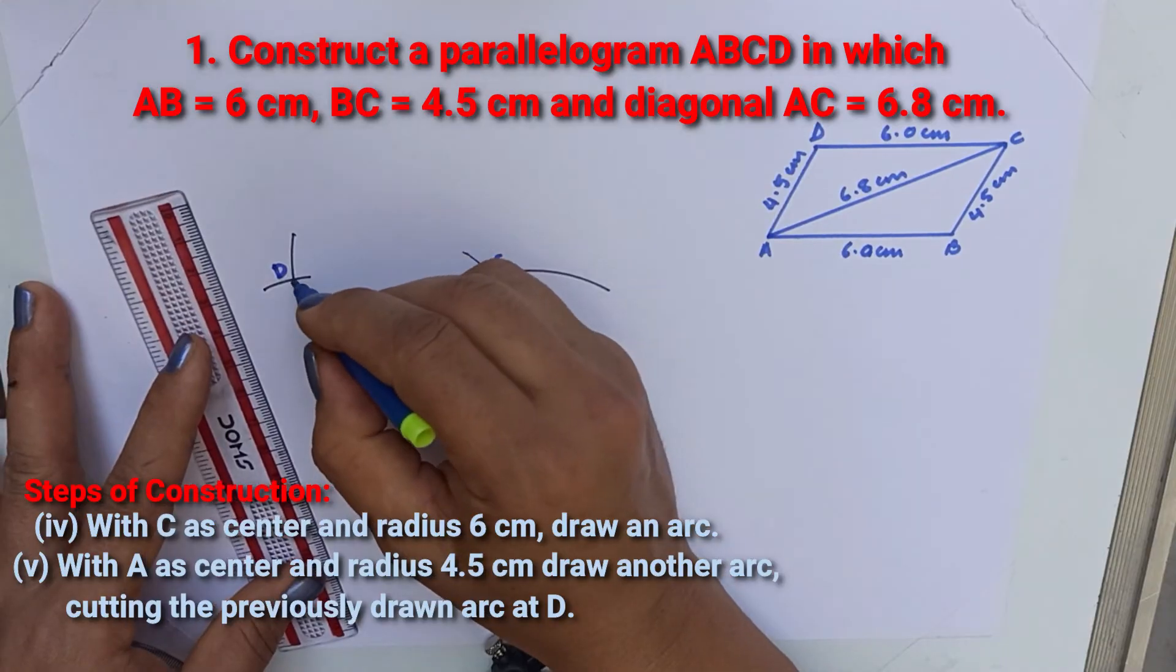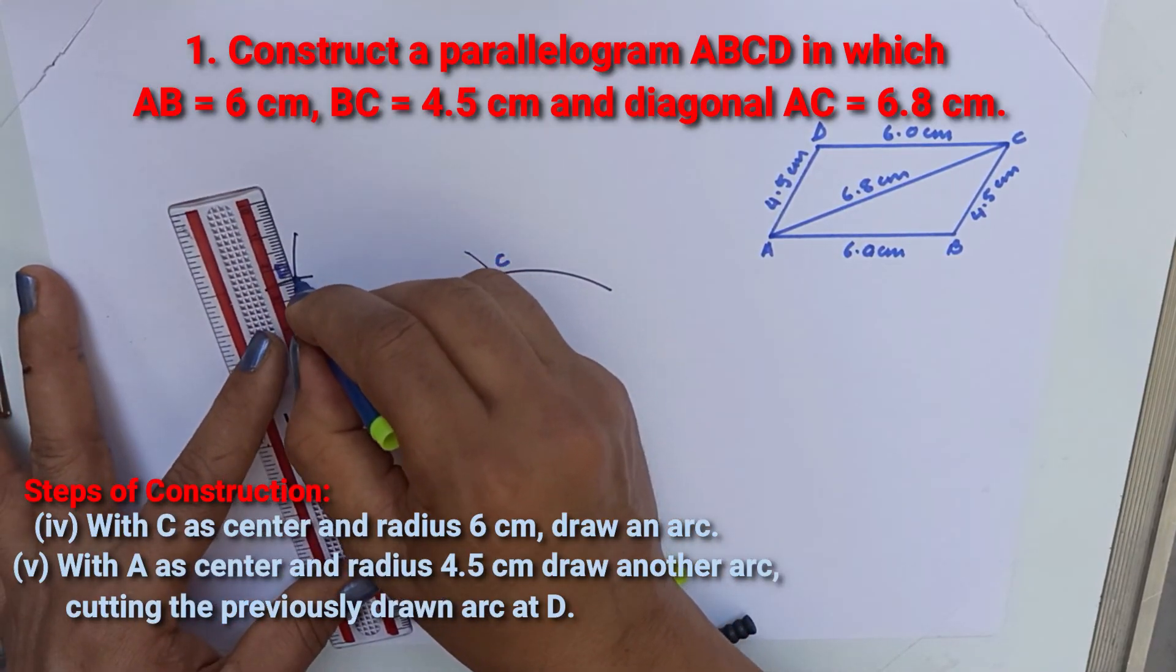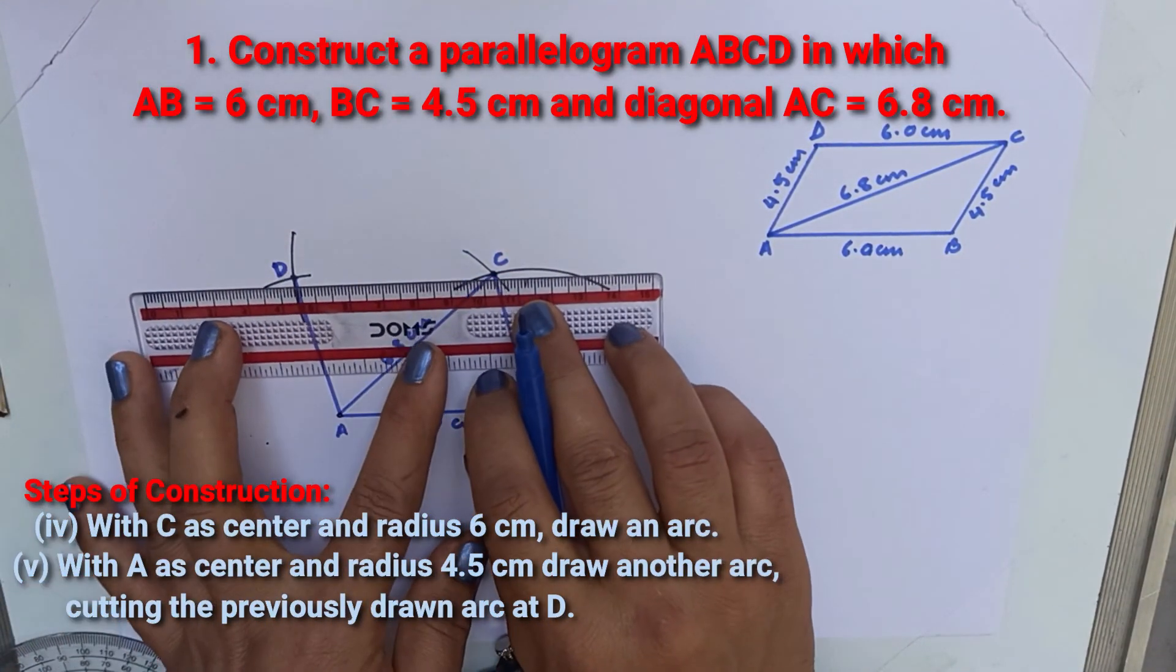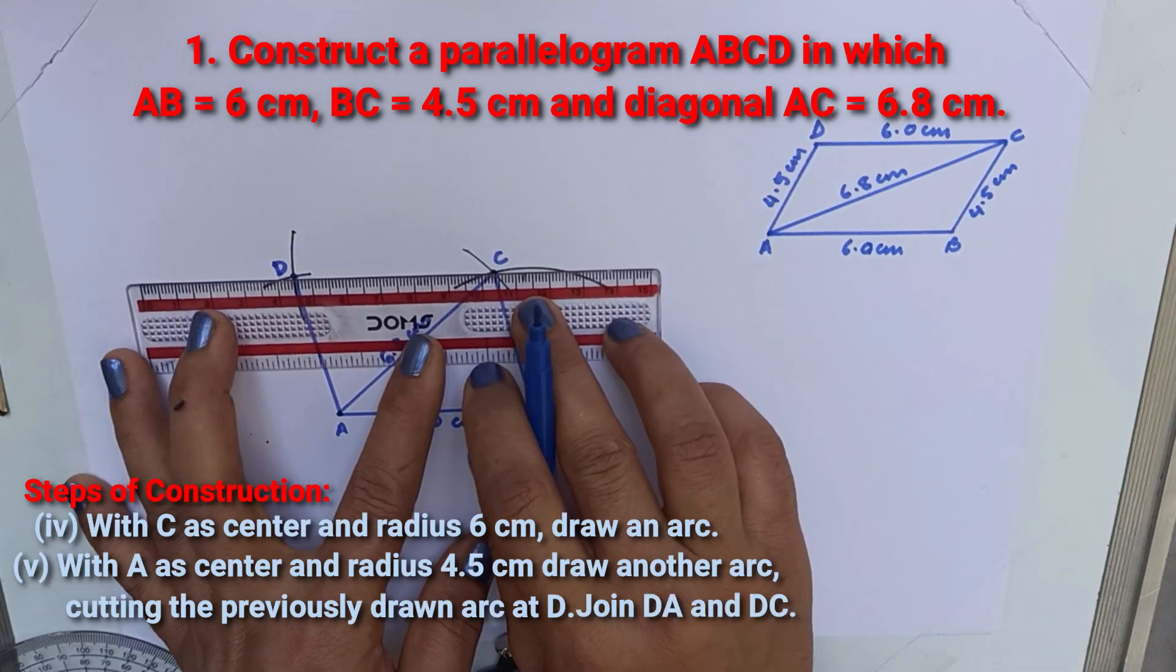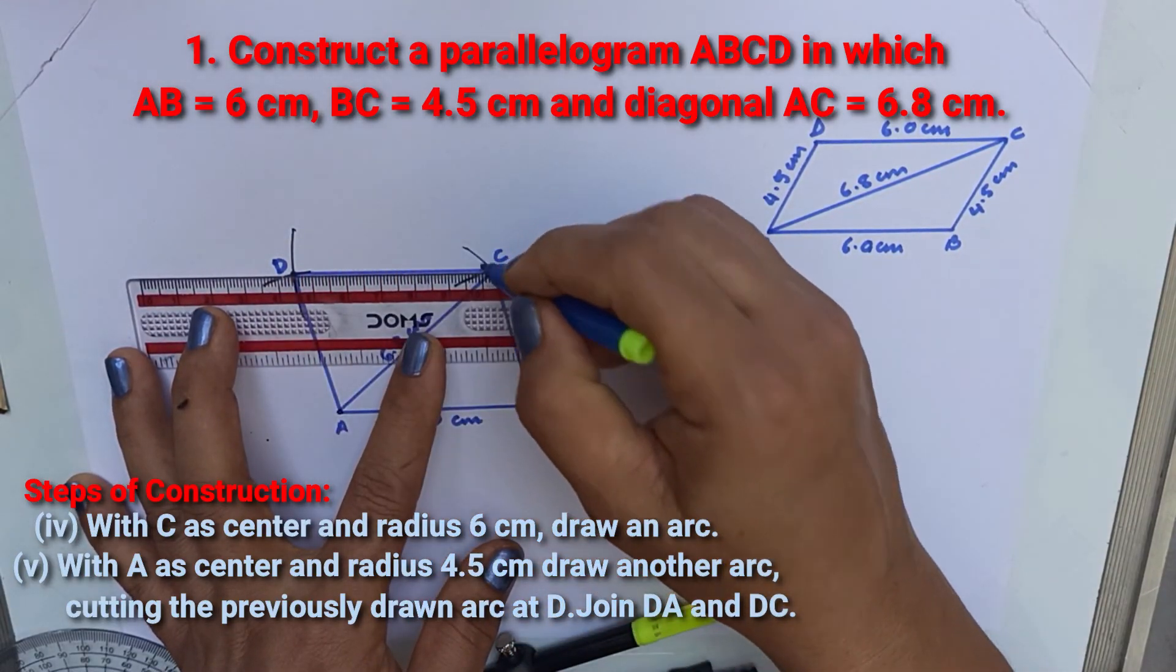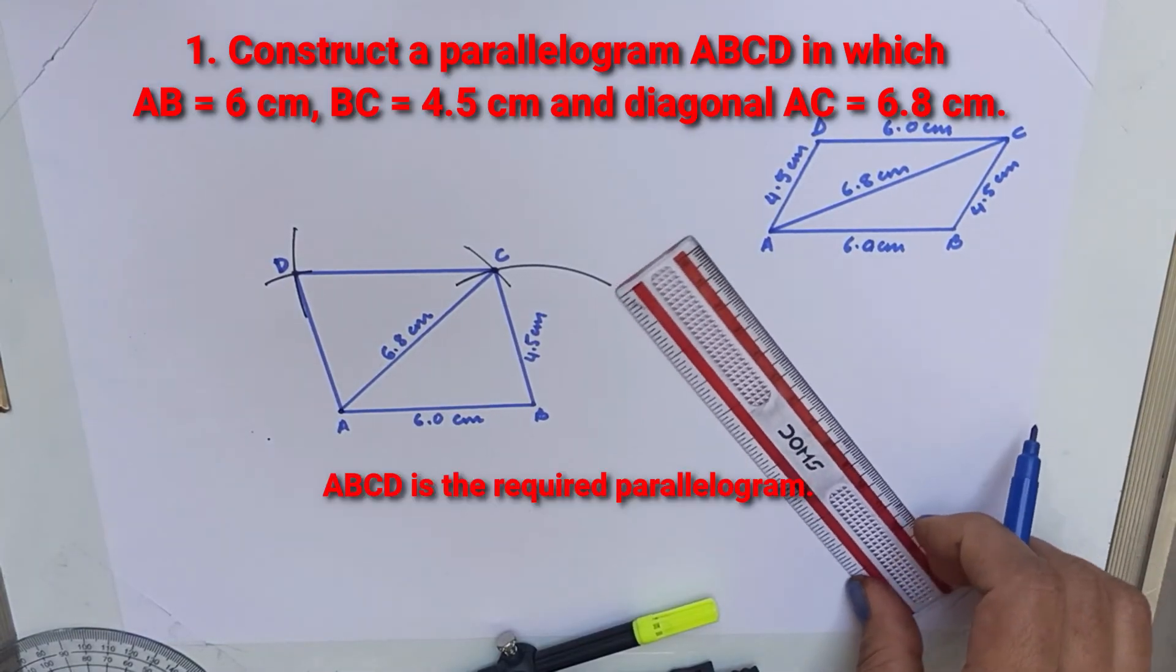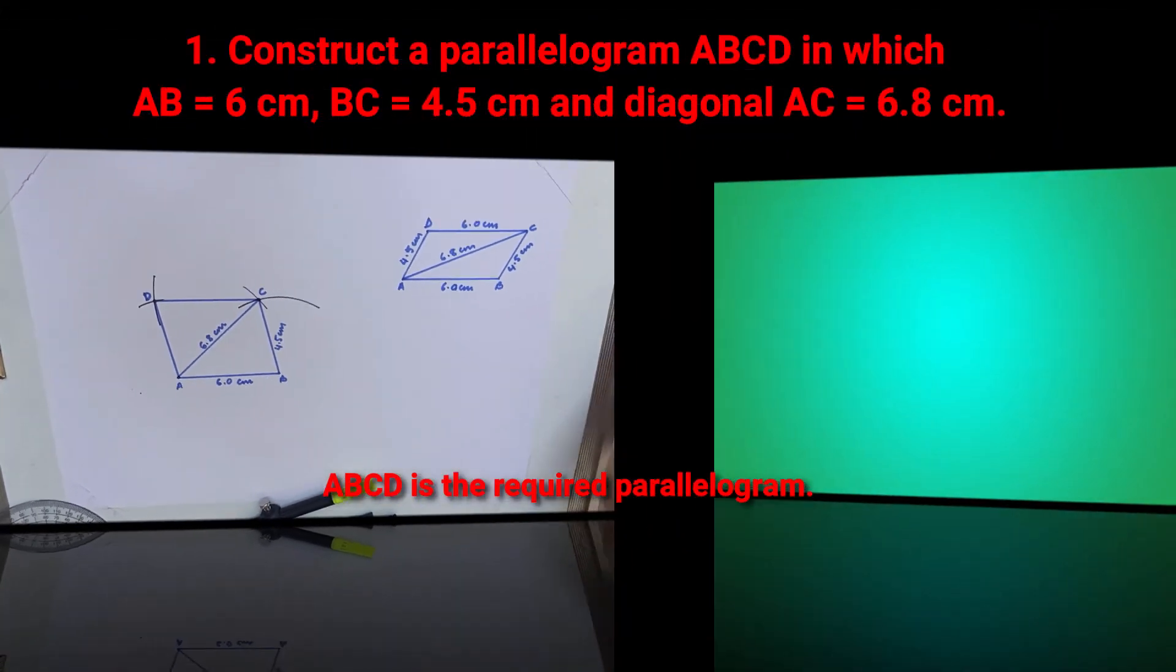Let this point be D, join D with A and C. This is the required parallelogram ABCD.